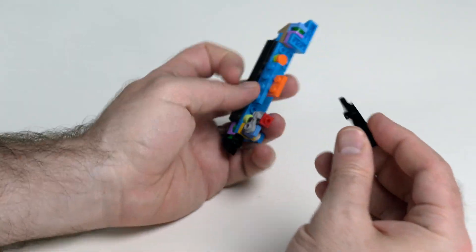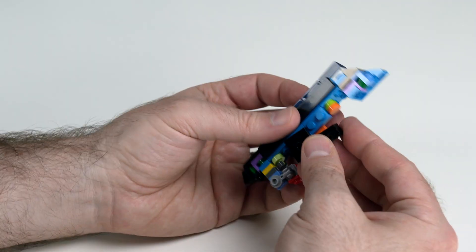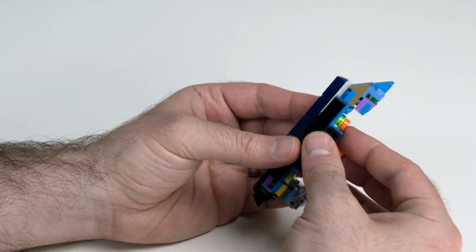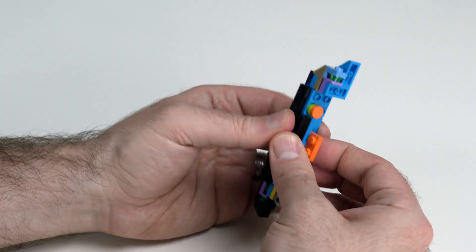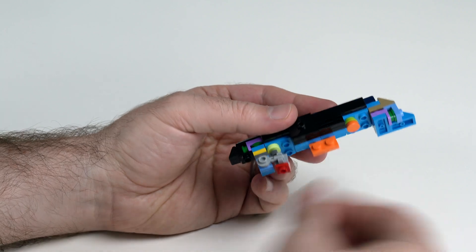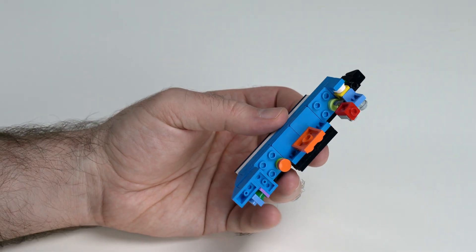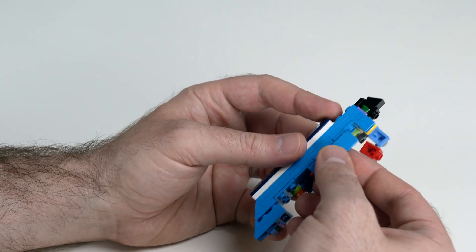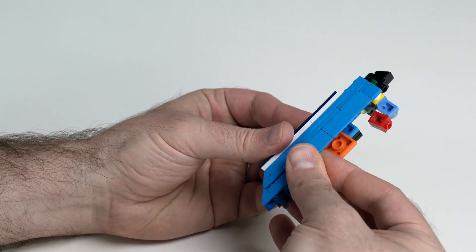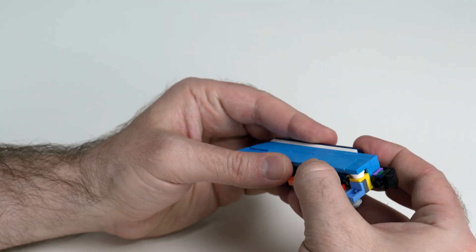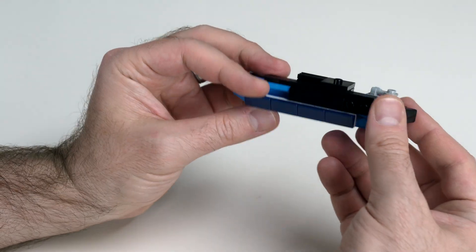On top, so this is just a one by four plates, a grill tile and a two by two, is that a jumper? Two by two tile with a stud in the middle. Like so. And then flipping back around. This is going to have a, this now gives me a purchase to be able to connect in these panels.